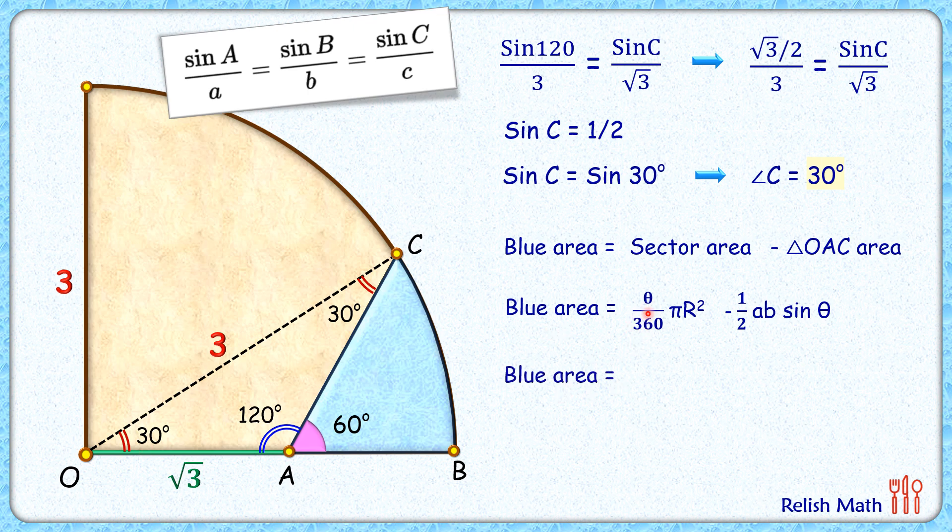Putting θ as 30 degrees, we get blue area = (30/360) × π × r² minus 1/2 × AB × sin θ. R is 3, so r² is 9. AB are the side lengths 3 and √3, and sin θ is sin 30 degrees.